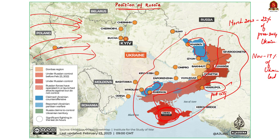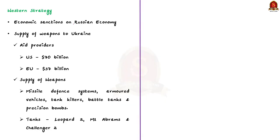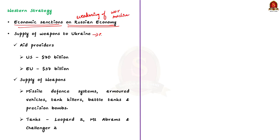The Western countries' approach has been twofold: one is to punish Russia's economy through sanctions, thereby weakening Russia's war mission; and the other is to provide arms to Ukraine, giving Ukraine the means to counter the Russian offensive. On one hand they are weakening Russia's offensive, and on the other they are helping Ukraine to counter it.